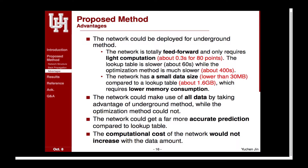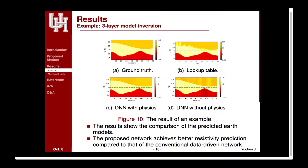With these two improvements, our network can be used in real applications. Because of our network architecture, it can run underground: it is fast to compute and requires very little memory. Compared to the iterative optimization process it can access the full data, and compared to the lookup table it achieves higher accuracy with lower computational and memory cost.